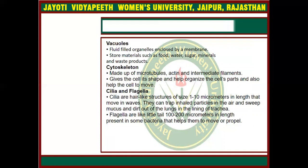The next organelle is cytoskeleton. Cytoskeleton is made up of microtubules, actin, and intermediate filaments. It provides structure to the cell and helps organize the cell parts and helps the cells to move. The shape of the cell is due to the cytoskeleton.